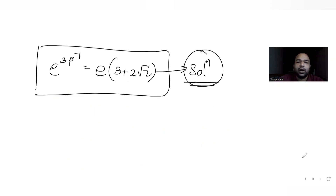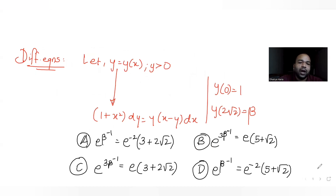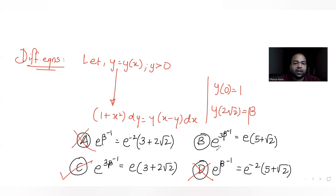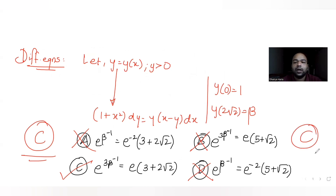After substituting both conditions, the result is e^(3β⁻¹) = e(3 + 2√2). Checking the options: option A (e^(β⁻¹)) is ruled out, option B is ruled out, option D is ruled out. Only option C matches. So C is the correct answer.